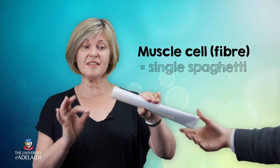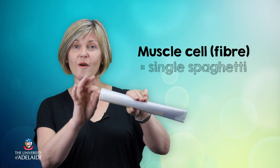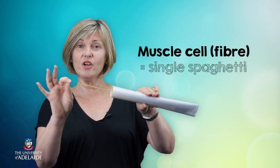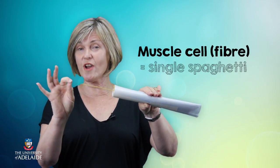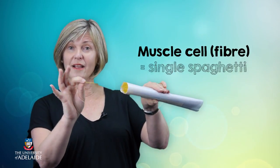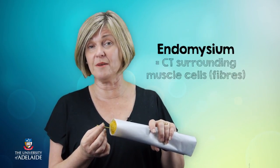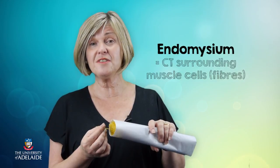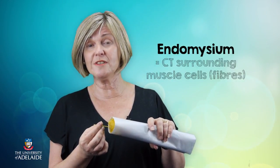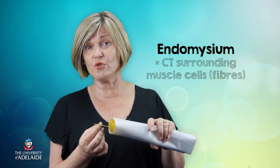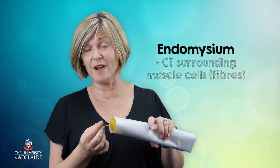Now it might be easy to think of a single muscle fiber as being similar to a single strand of spaghetti in a whole bunch. Each individual muscle fiber is coated in a fine connective tissue sheath known as endomysium. And this is where we find many nerves and blood vessels that are essential for good muscle function.